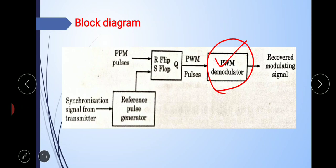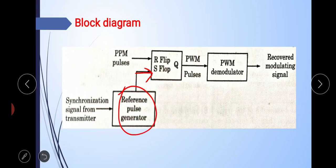We already know about the PWM demodulator. The remaining parts are the RS flip-flop and the reference pulse generator. The flip-flop is set or turned on when the reference pulse arrives at the S point. This reference pulse is generated by the reference pulse generator at the receiver, using a synchronization signal coming from the transmitter. The flip-flop is reset or turned off at the leading edge of the pulse position modulated signal. This process repeats and we get PWM pulses at the output of the flip-flop.